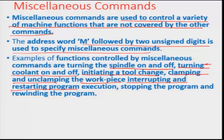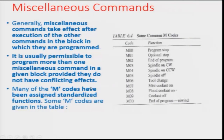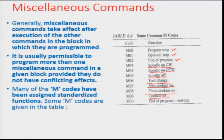Other miscellaneous operations include interrupting and restarting program execution, stopping the program altogether, or rewinding the program to a certain level. Common standardized M codes include: M00 for program stop, M01 for optional stop, M02 for end of program, M03 for clockwise spindle, M04 for counter-clockwise spindle, M05 for spindle off, M06 for tool change, M07 for mist coolant on, M08 for flood coolant on, M09 for coolant off, and M30 for end of program rewind.